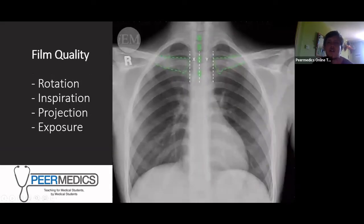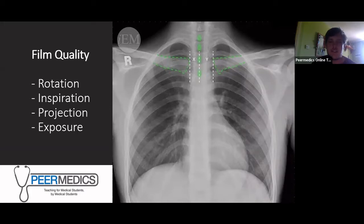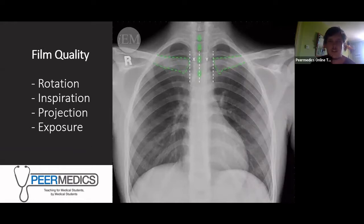To assess film quality, you want to comment on these things before explaining what you can see on the X-ray. A useful mnemonic is RIPE: Rotation, Inspiration, Projection, and Exposure. Let's go through each one.